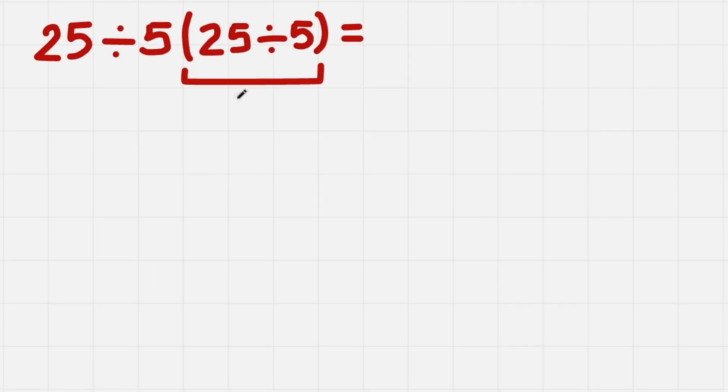25 divided by 5 gives us 5. We are left with 25 divided by 5 and also multiplied by this 5 that we got. Now we work from left to right.